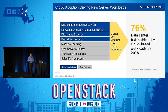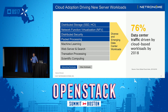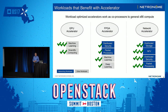Most traffic these days is not intra-datacenter — it's essentially cloud-based workloads: distributed storage, NFV, distributed security and packet processing, and all of those are networking workloads. Add to that workloads from machine learning, server search, transaction processing, et cetera. You need to start offloading the CPU — adding in functionality so that these features can be done in a quicker and more effective way.